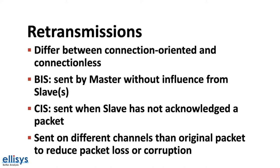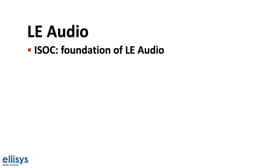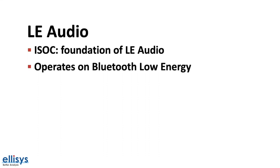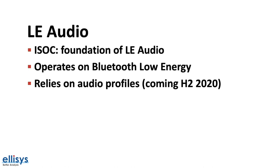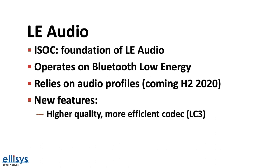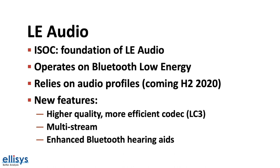Isochronous channels are the foundation for the next generation of Bluetooth audio, referred to as LE Audio. LE Audio operates on Bluetooth Low Energy rather than the traditional Bluetooth Classic or BR/EDR, as in most current audio applications. LE Audio not only provides support for the same features as Bluetooth Classic, but also introduces a few new features and enhancements. For example, it introduces a new higher quality and more efficient codec called LC3. It also introduces multi-stream capabilities, such as transmitting separate left and right audio streams, and even streams in multiple languages. Other features include support for enhanced Bluetooth hearing aids, and support for audio sharing and audio broadcasting to unlimited listeners.